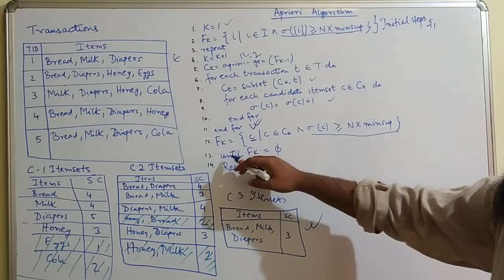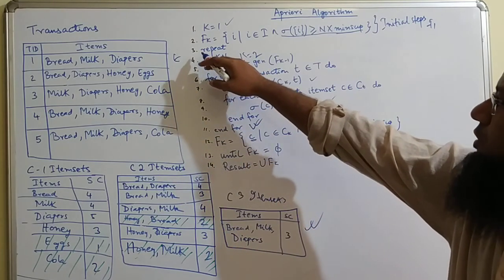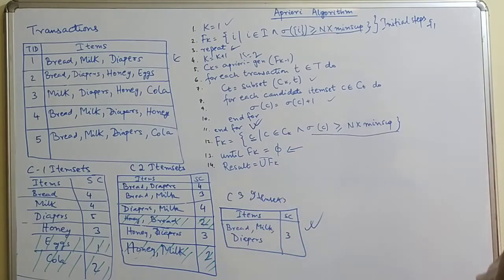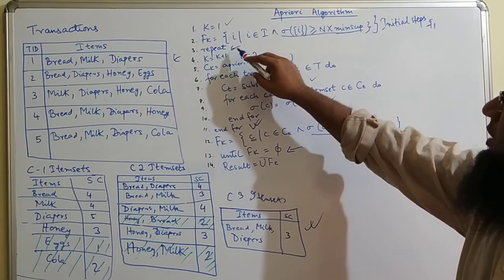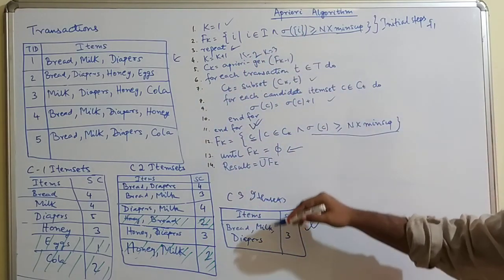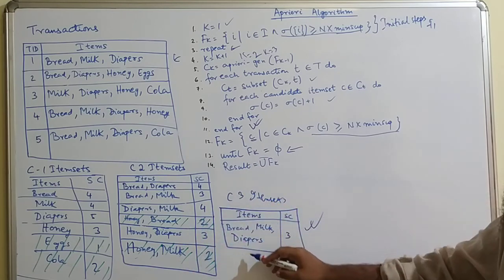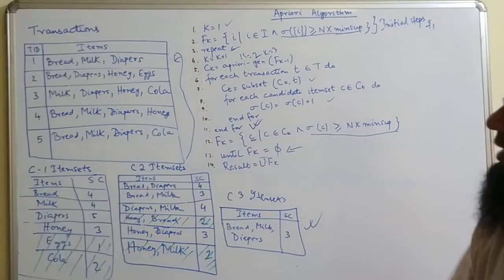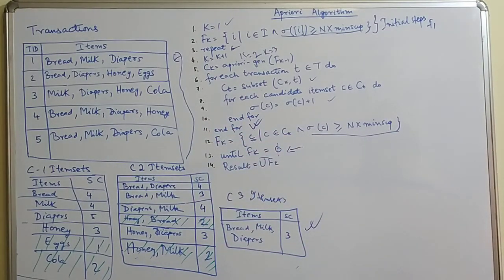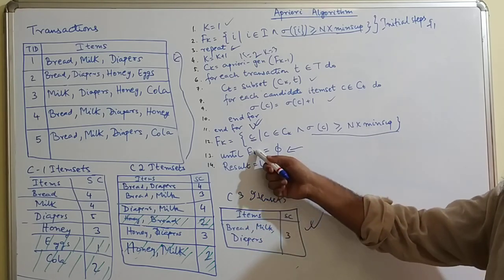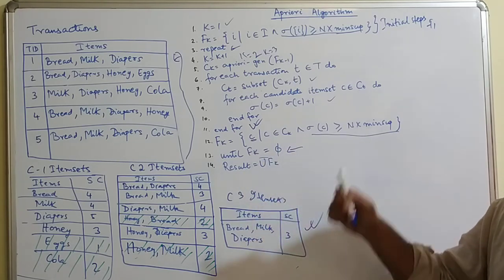This loop will continue because there is a loop here as well, until f of k equals null. The loop will continue with k equals 3. Again the combination of 3 item sets will be taken and the support count will be measured from the entire item set. The loop ends when you are not able to find any new frequent item set.